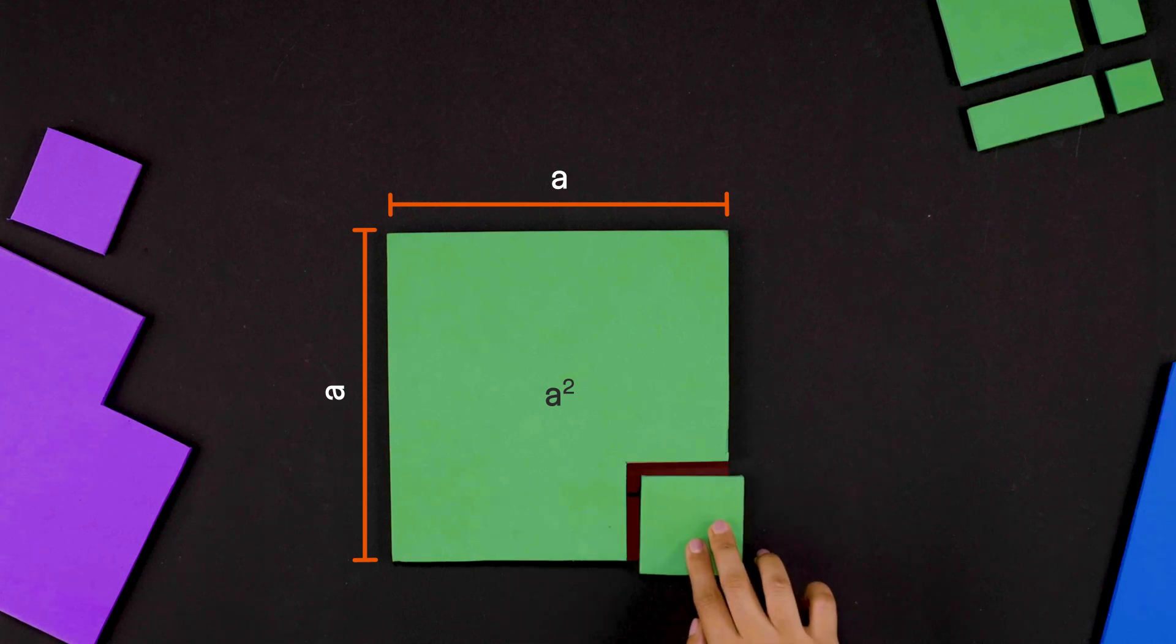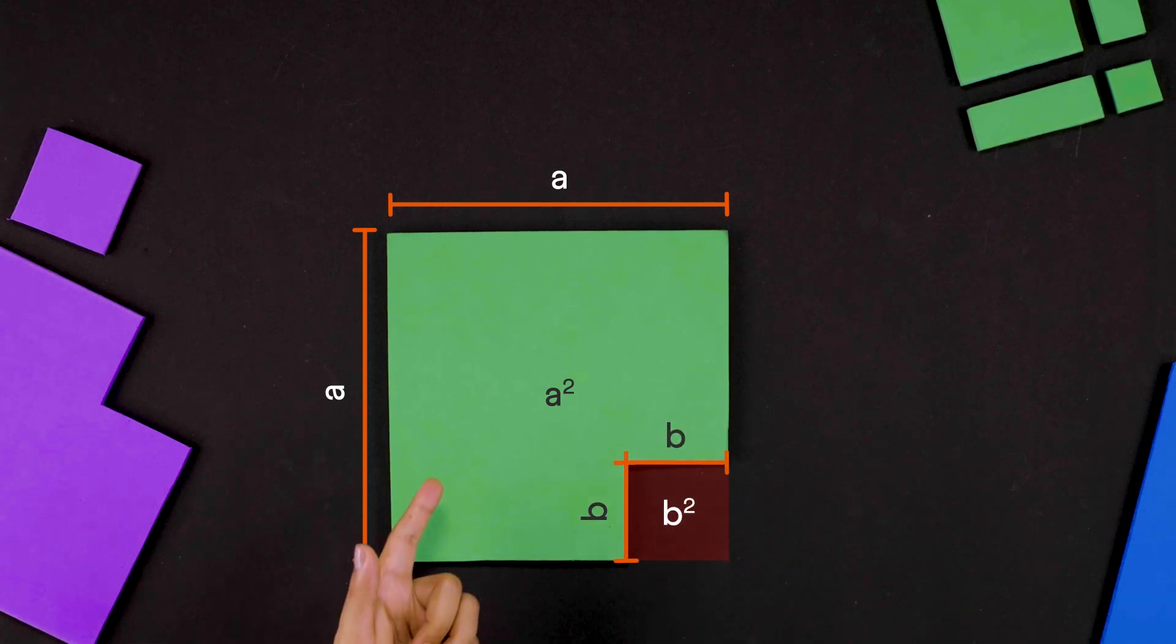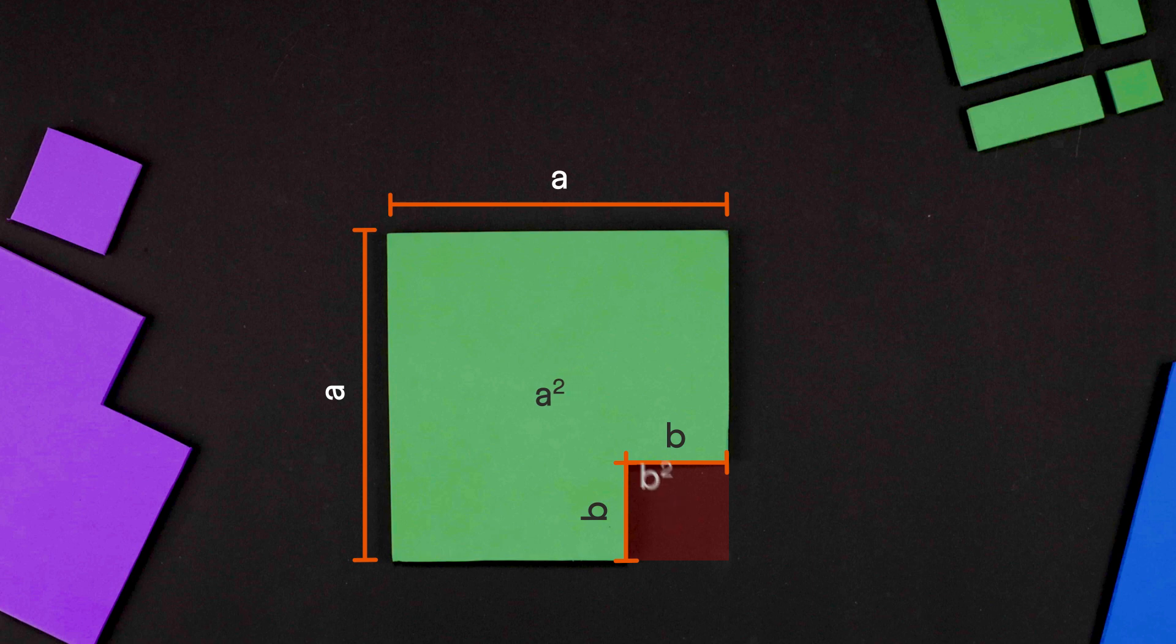To find a squared minus b squared, let's chop off a square with side b units from one of its corners. The remaining area must be a squared minus b squared. How do we find this area?